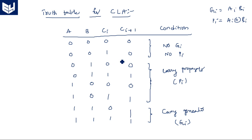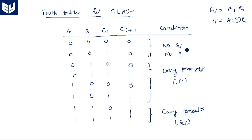From the definitions of Gi and Pi we have derived this truth table. One important thing to note: we have taken the carry generate and carry propagate conditions irrespective of Cin — the input carry. We have not considered Cin at all; just the formula of Gi and Pi to determine where carry generate and carry propagate occur.